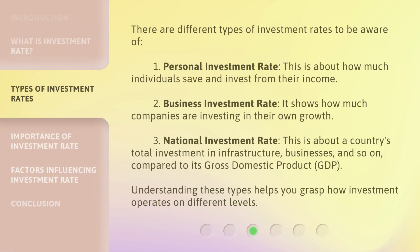There are different types of investment rates to be aware of. First, Personal Investment Rate — this is about how much individuals save and invest from their income. Second, Business Investment Rate — it shows how much companies are investing in their own growth. Third, National Investment Rate — this is about a country's total investment in infrastructure, businesses, and so on, compared to its gross domestic product, GDP. Understanding these types helps you grasp how investment operates on different levels.